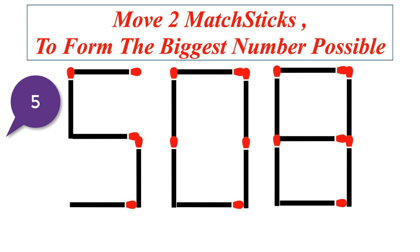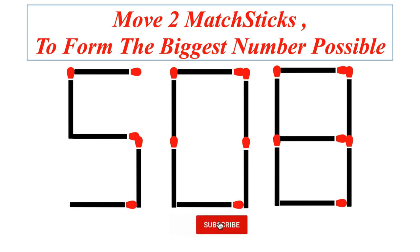If you can move two matches — this is one of the popular puzzles currently trending on social media and WhatsApp. The number 508 is creatively written down with matchsticks. In this puzzle you can only move two matchsticks to get the biggest number possible. There are multiple answers depending on your interpretation. Try to find the biggest number possible by switching around the matchsticks.